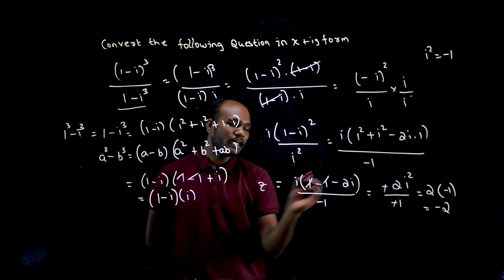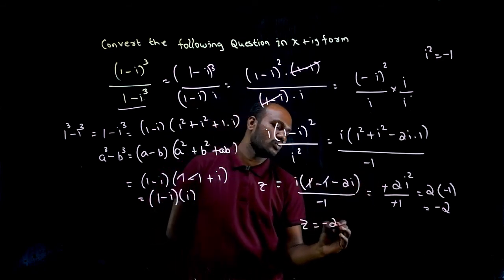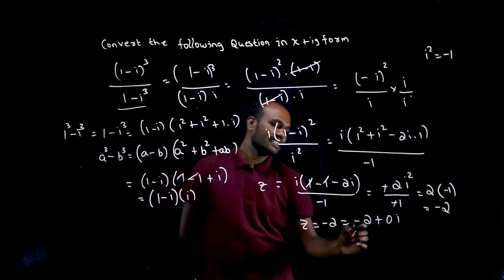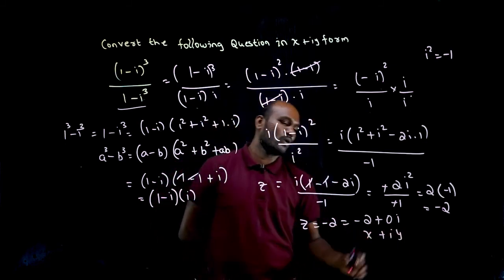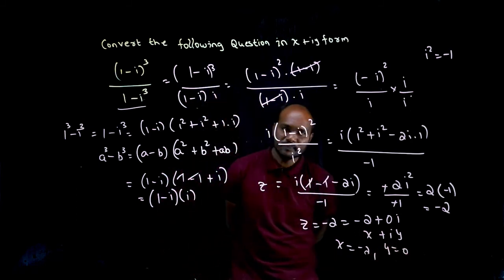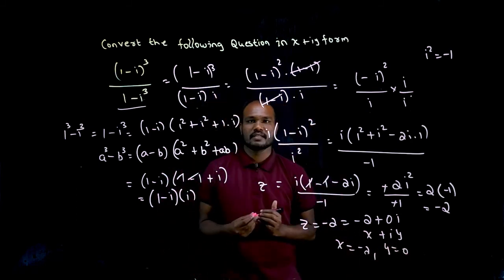So z equals -2, that is -2 + 0i. This is in the form of x + iy. What is the x value? Minus 2. What is y value? 0. Is that okay?